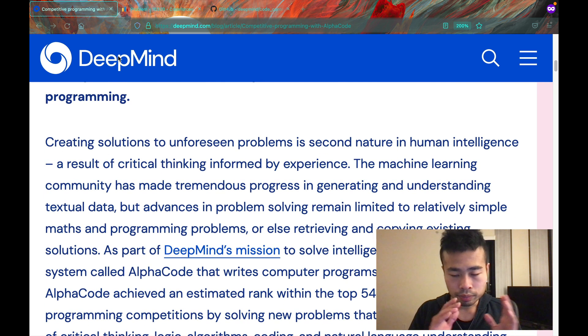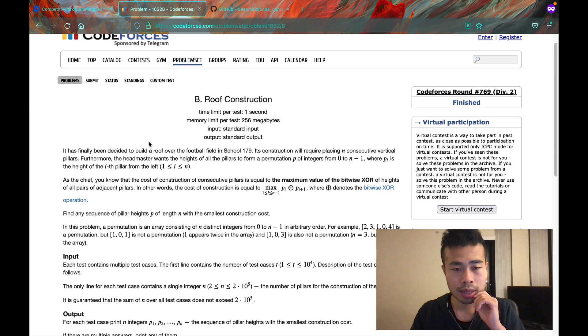AlphaCode is an AI created by DeepMind. They can solve competitive programming problems really well. In fact, he attended certain competitions and he ranked within top 54% of the competition attendees, which is very impressive. And the problems he solved is something like this.